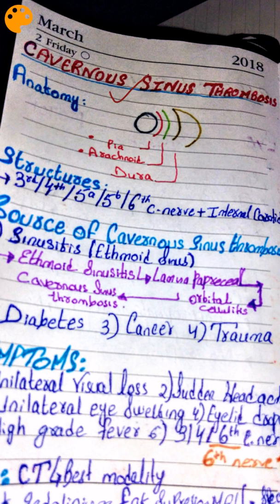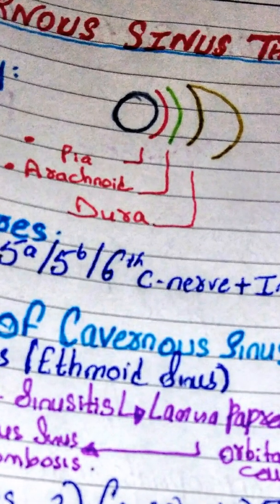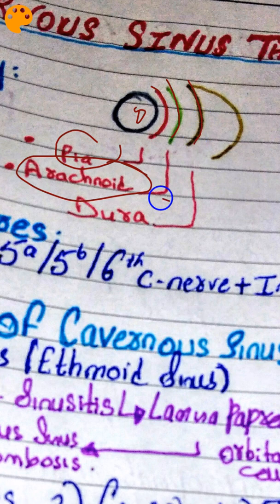Before going into detail, let's discuss the anatomy first. Consider this is our brain. The first layer after our brain is pia mater, the second layer is arachnoid mater. These are all meningeal layers, and the third and outermost layer is dura mater. Dura mater itself consists of two layers.